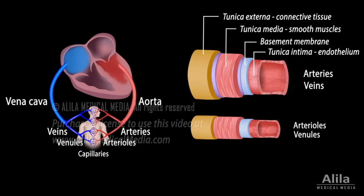In addition, arteries have more muscles than veins because they carry blood away from the heart and must withstand higher pressures generated by the beating of the heart. The walls of capillaries, whose function is to exchange substances between the blood and surrounding tissue, consist solely of a thin endothelium with its basement membrane, thus permitting easy diffusion of blood solutes.